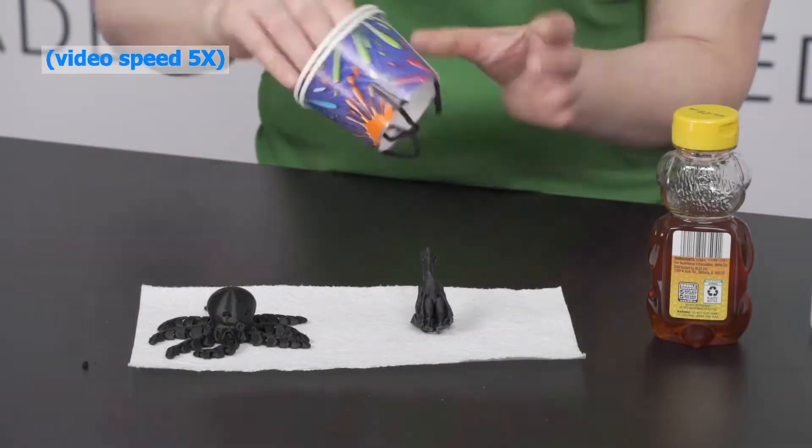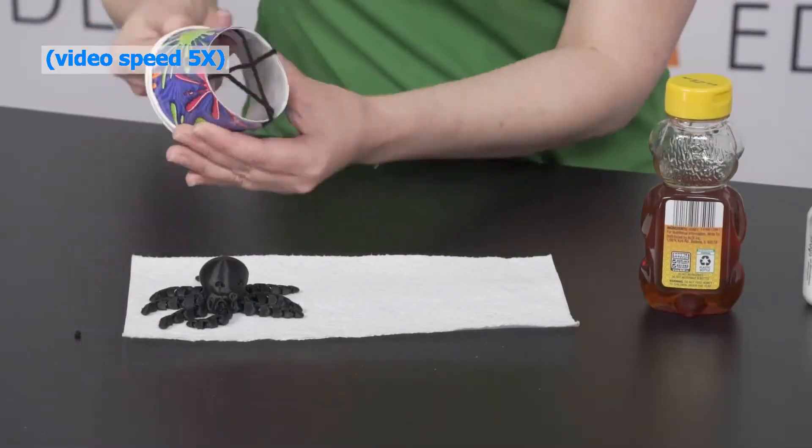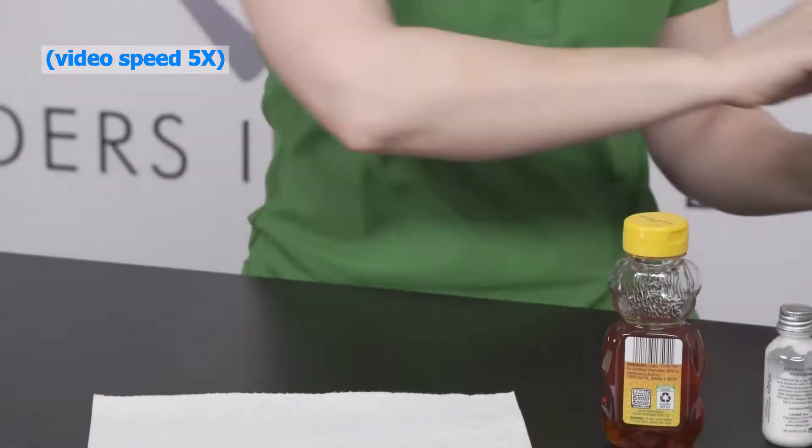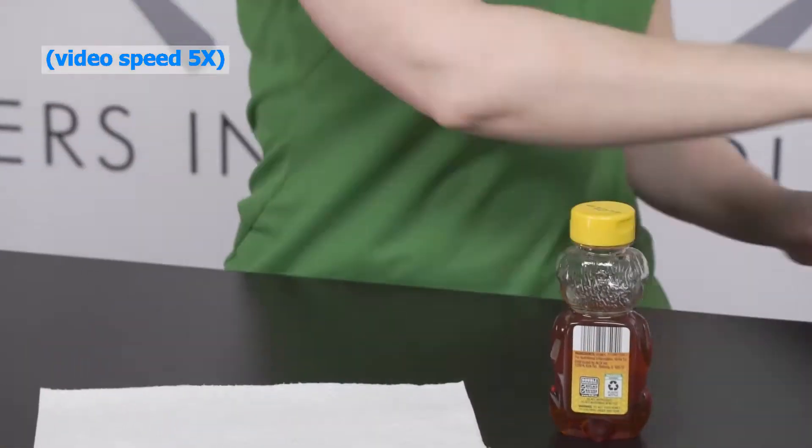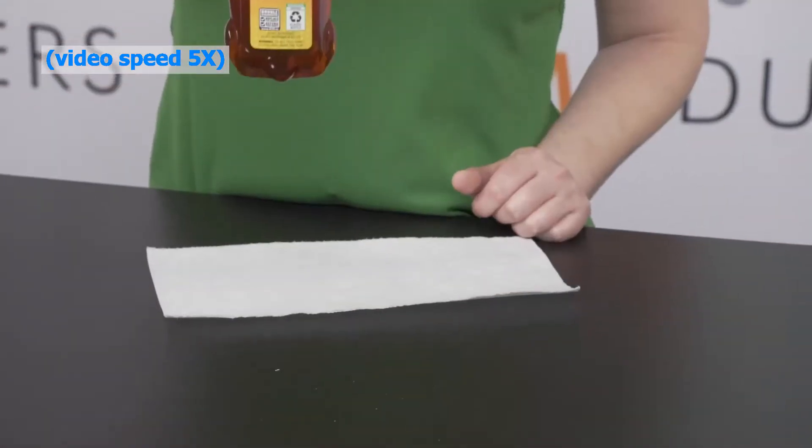Have fun exploring the different types of things your end effector can lift. Talk to an adult and see if you can think of other materials you might use to improve your prototype and make it capable of lifting heavier loads.